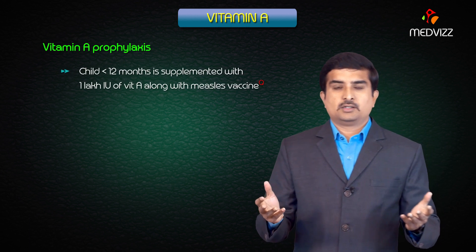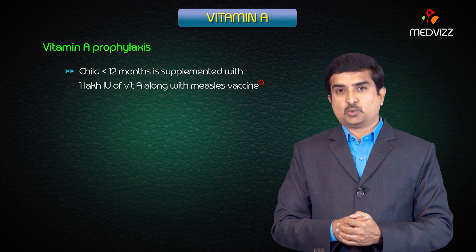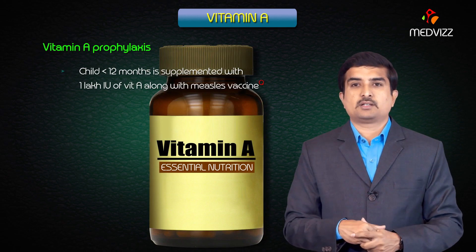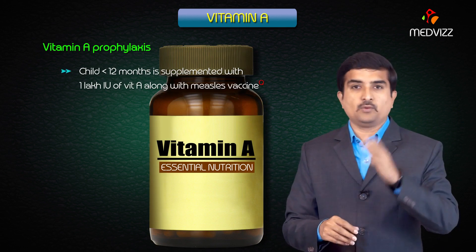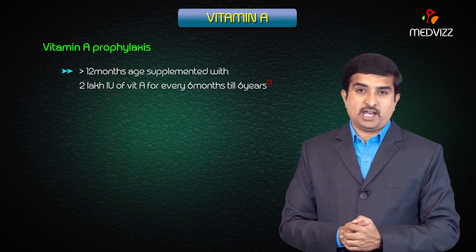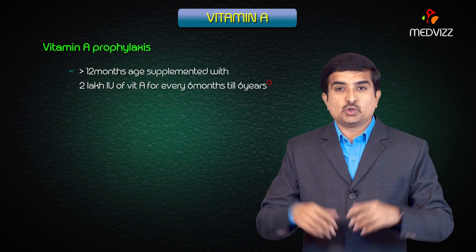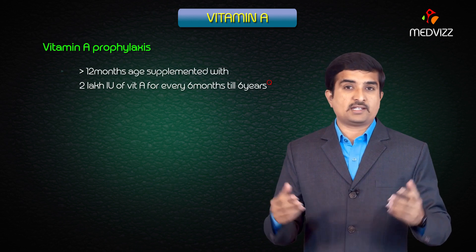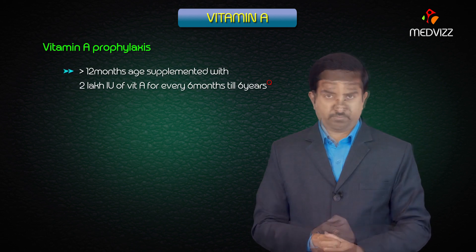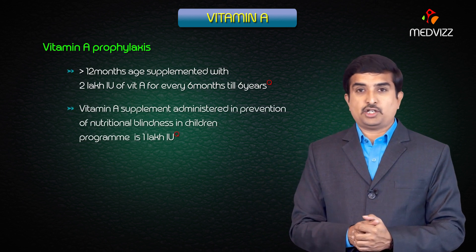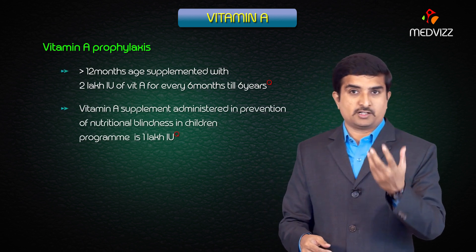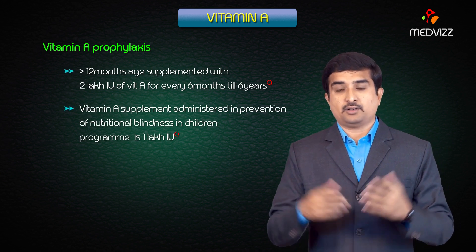For vitamin A prophylaxis: children less than 12 months are supplemented with 1 lakh (100,000) IU of vitamin A along with the measles vaccine. Children greater than 12 months are supplemented with 2 lakh (200,000) IU of vitamin A every six months until six years of age. The vitamin A supplementation dose administered in the prevention of nutritional blindness in children program is 1 lakh IU.